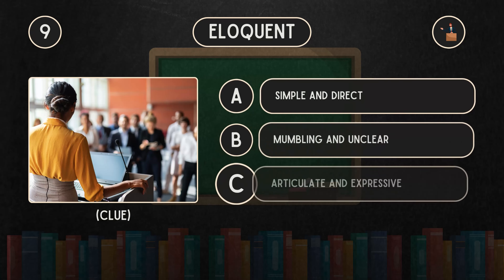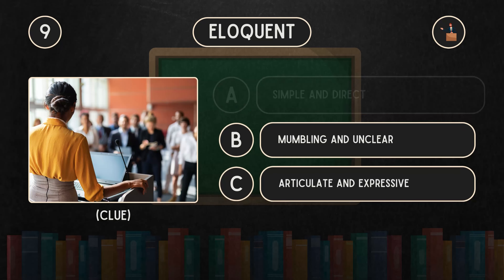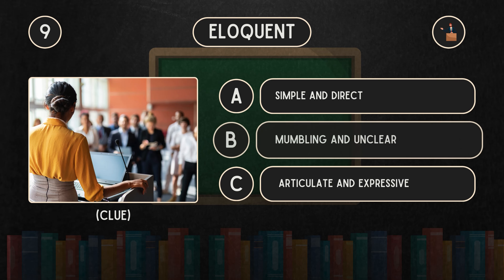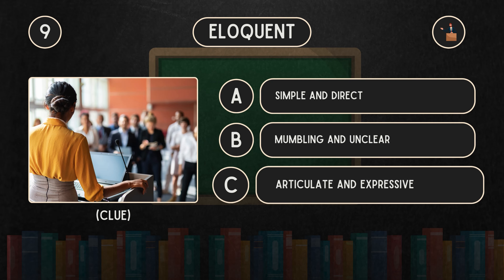What does eloquent mean? Is it A: Simple and direct. B: Mumbling and unclear. C: Articulate and expressive.